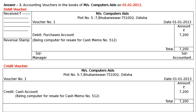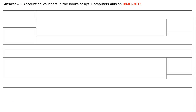We have to get the signature — that is SD manager in the left side, and right hand side it will be SD accountant. Then, the next date, that is 8th January. Accounting voucher in the books of Messers Computer Aids, 8th January 2013. First of all, we have to draw a debit voucher.